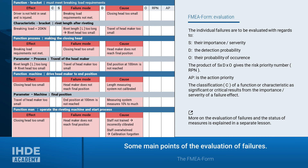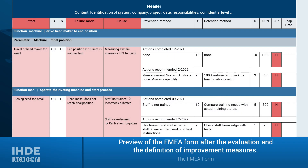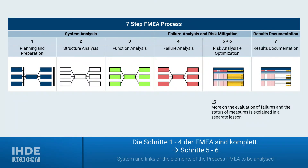The result of this risk assessment is a risk priority number or an action priority. How such an FMEA form looks, including the status of preventive actions, is shown here — but this part is covered in a separate lesson. Here again are the 7 steps of the FMEA from the beginning of the lesson. We have discussed steps 1 to 4 in this lesson; steps 5, 6, and 7 are the topic of a separate lesson.